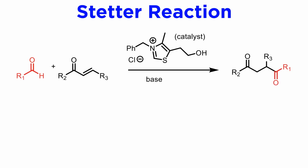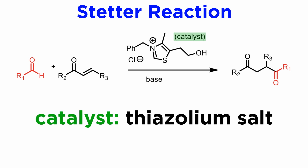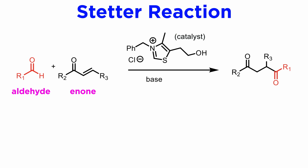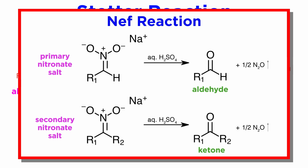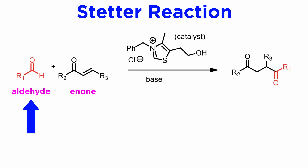Let us first introduce the reaction. The catalyst which drives the Stetter reaction is a thiazolium salt, and this allows the condensation of an aldehyde with an enone. Note that this transformation is similar to the umpolung with nitronate anions in conjunction with the Neff reaction, but it has the advantage that we do not have to use an aldehyde equivalent — rather the aldehyde itself is used directly, and it appears to produce an acyl anion which is added to the conjugate position of an enone.